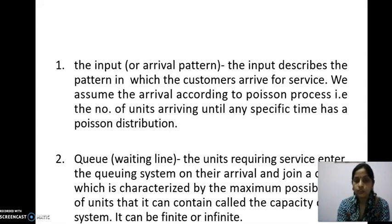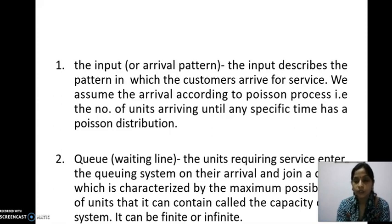Second is the queue, also known as the waiting line. The units requiring service enter the queuing system on arrival and join a queue, which is characterized by the maximum possible number of units it can contain, called the capacity of the system. It may be finite or infinite, where the number of customers can be countable. If the number of persons are not countable, they are considered a crowd.